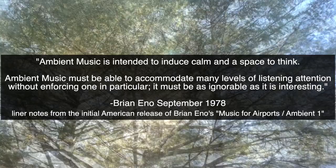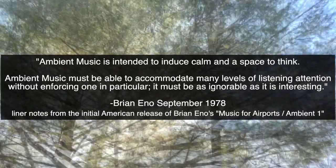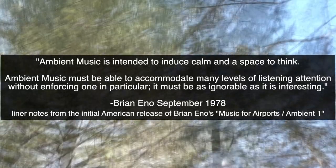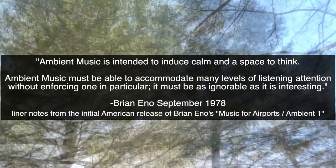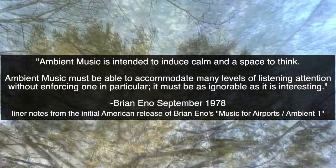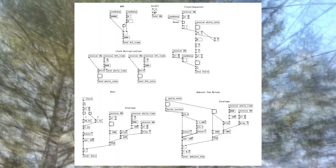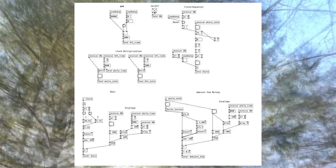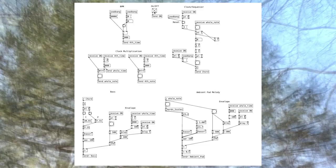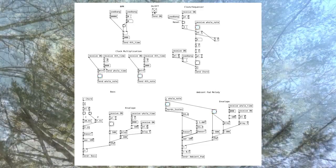What is Ambient Music? As Brian Eno explained, Ambient is intended to induce calm and a space to think. Ambient Music must be able to accommodate many levels of listening attention without enforcing one in particular. It must be as ignorable as it is interesting. What we're going to do in this video is create a Pure Data patcher that will algorithmically compose and play Ambient Music.